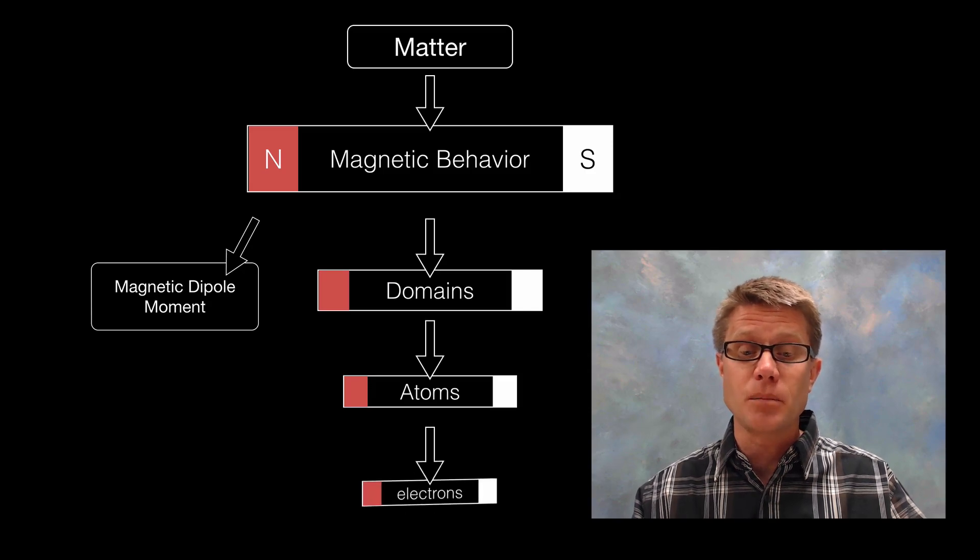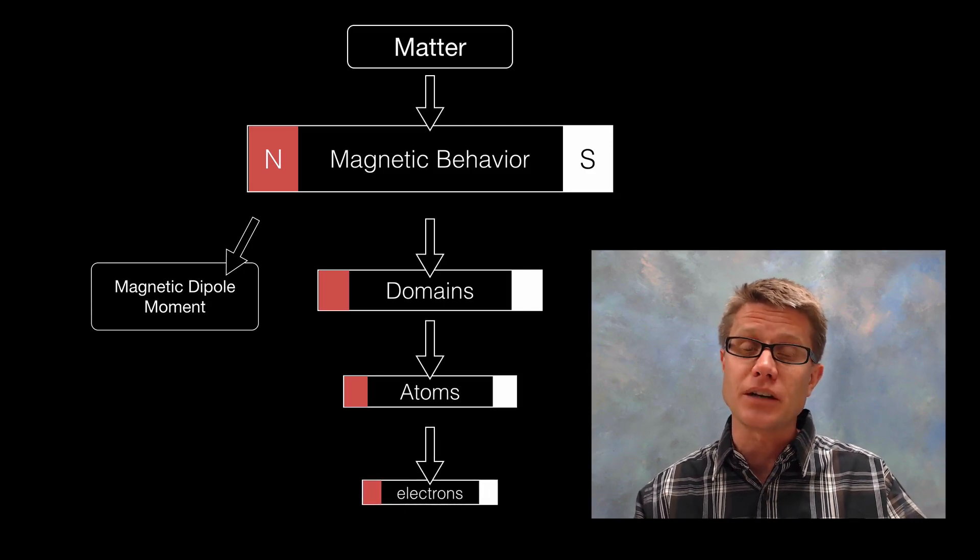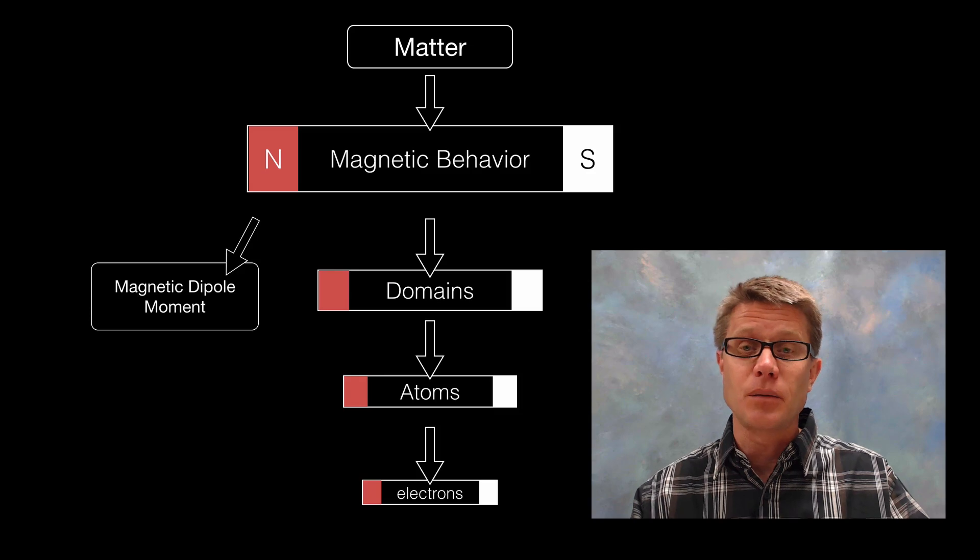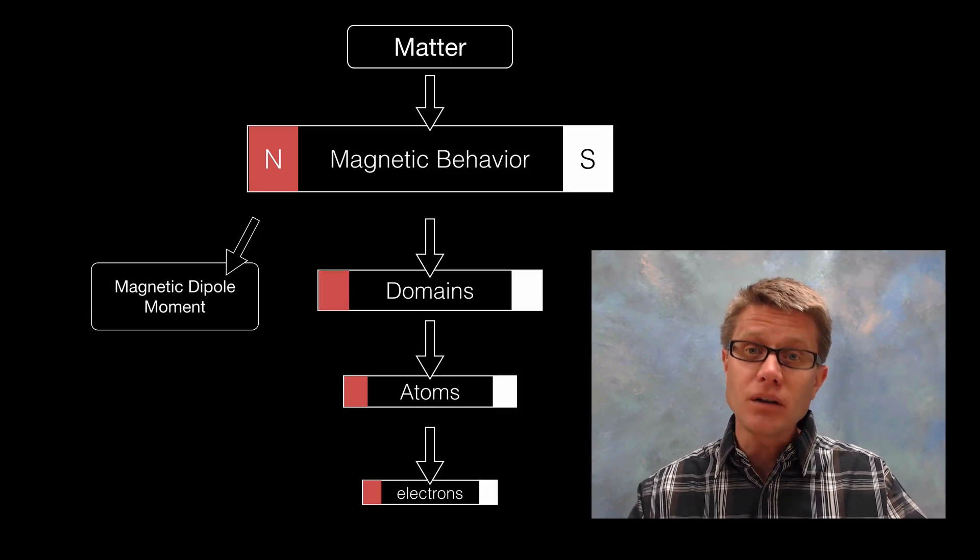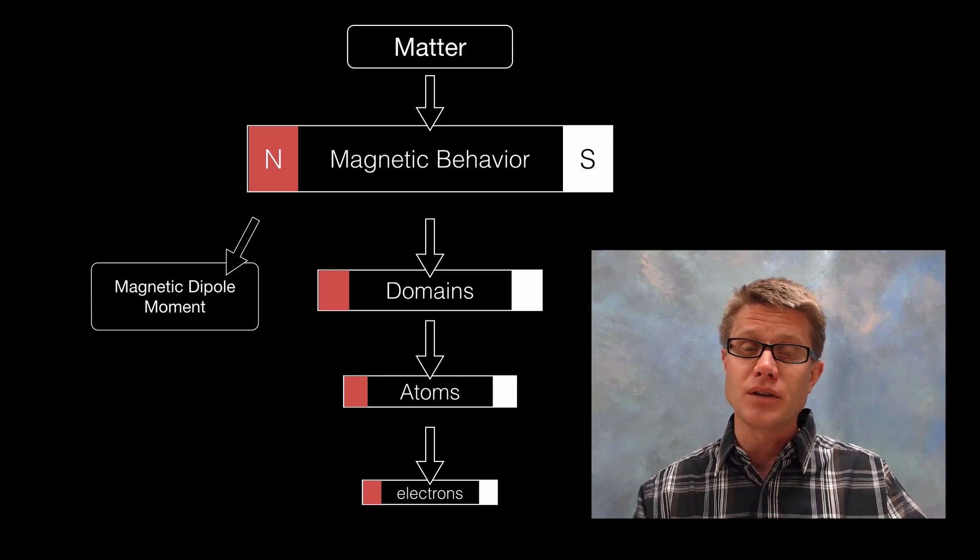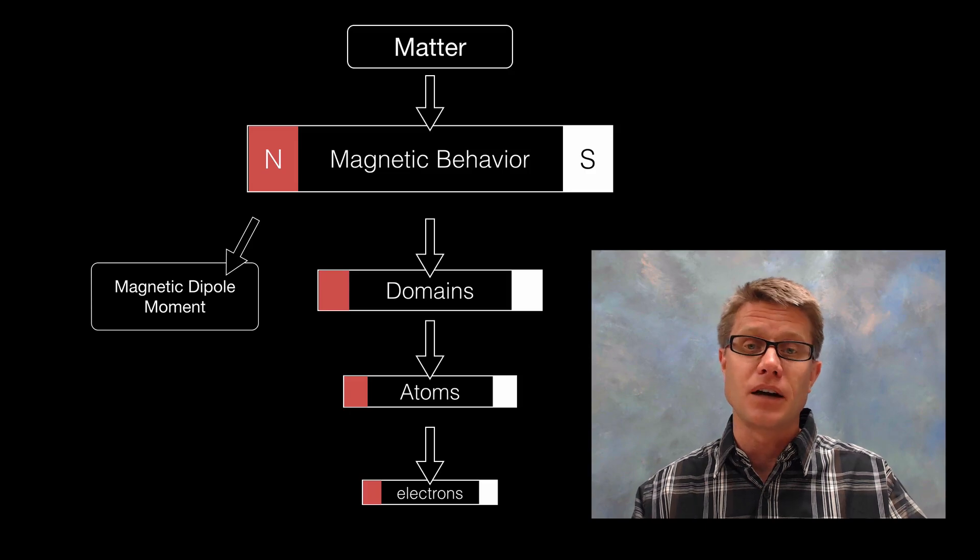Atoms themselves are made up of electrons. And the spin of those electrons gives them a magnetic dipole moment as well. And so all of these levels of dipoles is creating the overall effect of a magnet.